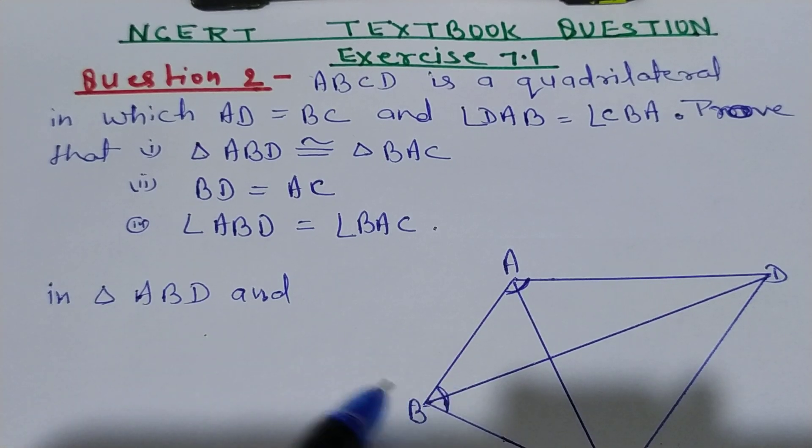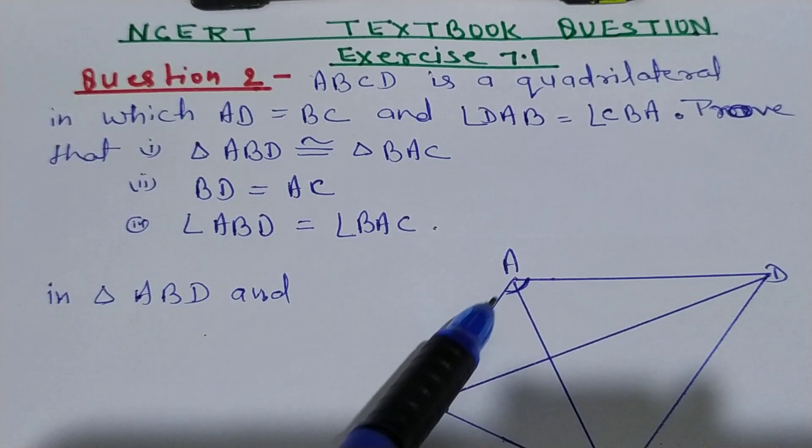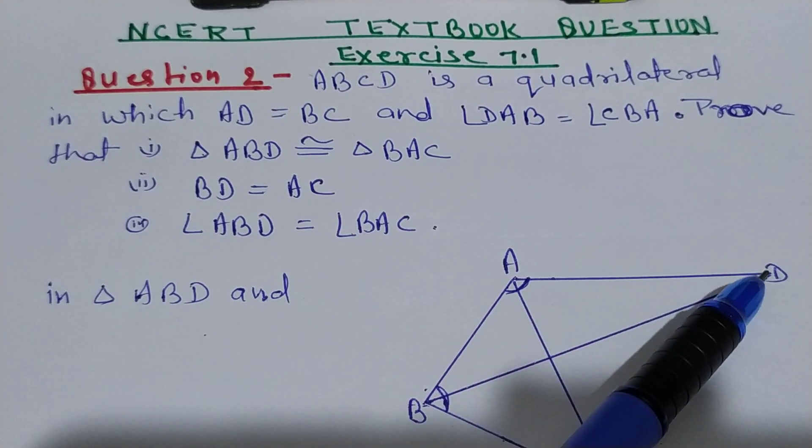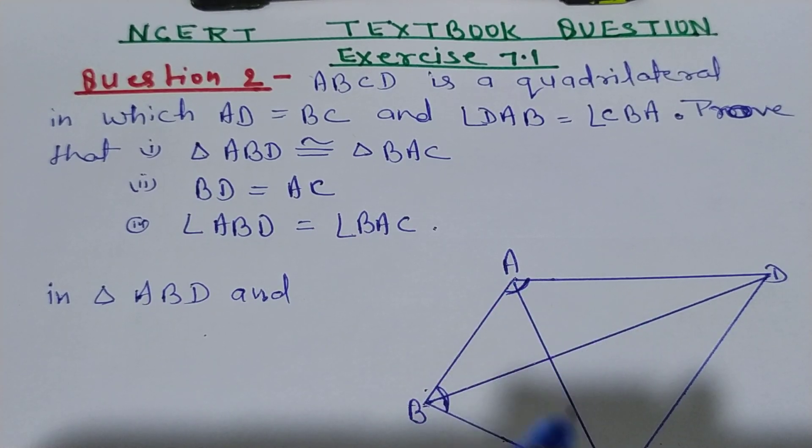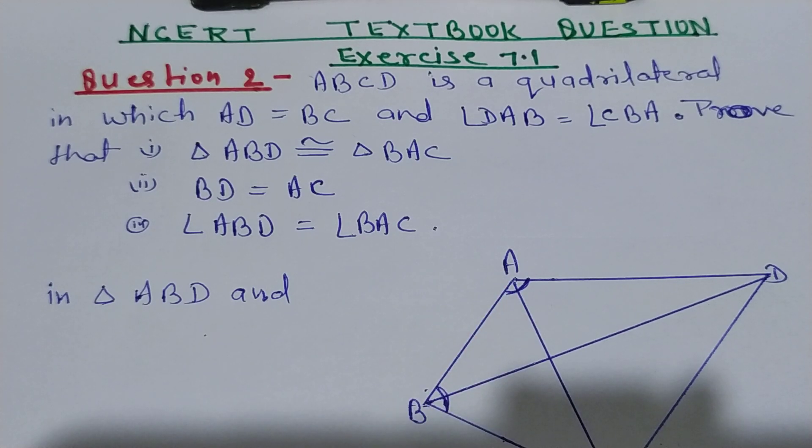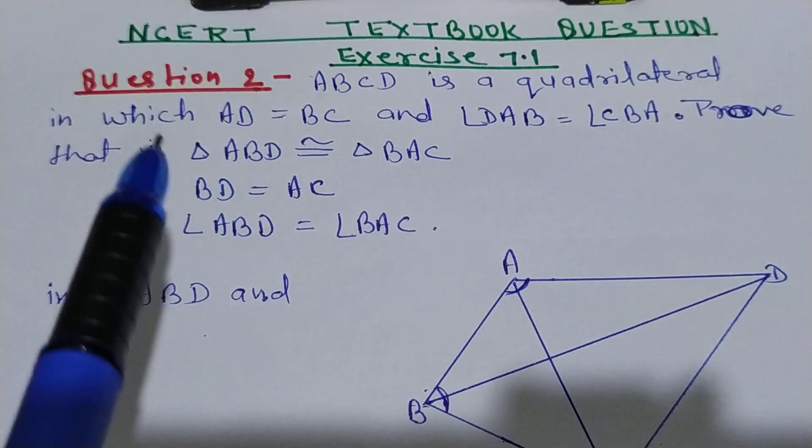In the figure, ABCD is a quadrilateral in which we are given AD equal to BC and angle DAB, this angle, equal to angle CBA, this angle. These two angles are equal.